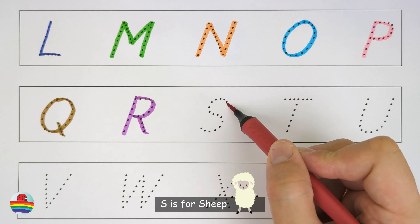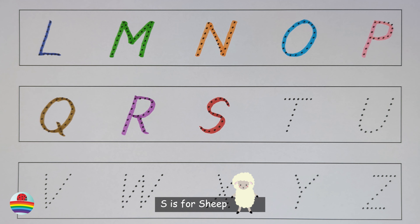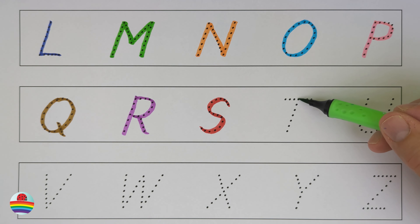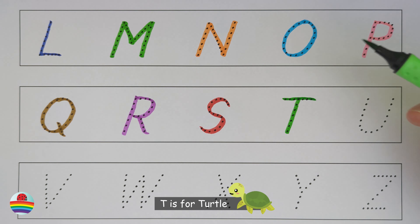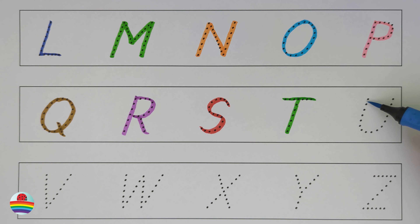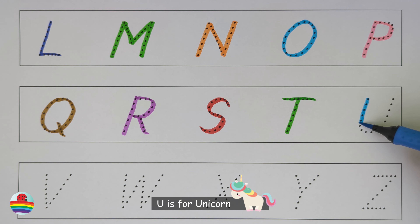S. S is for sheep. T. T is for turtle. U. U is for unicorn.